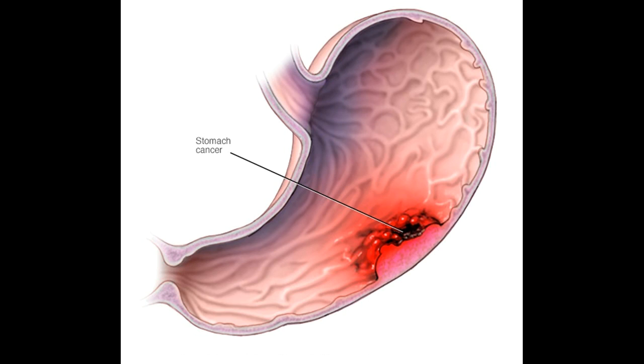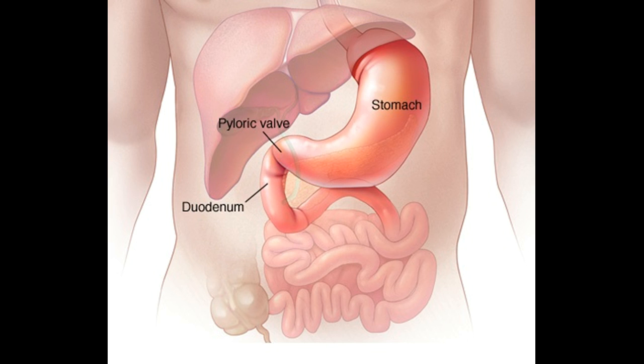Your stomach receives and holds the food you eat and helps to break down and digest it. Another term for stomach cancer is gastric cancer. These two terms most often refer to stomach cancer that begins in the mucus-producing cells on the inside lining of the stomach — adenocarcinoma.